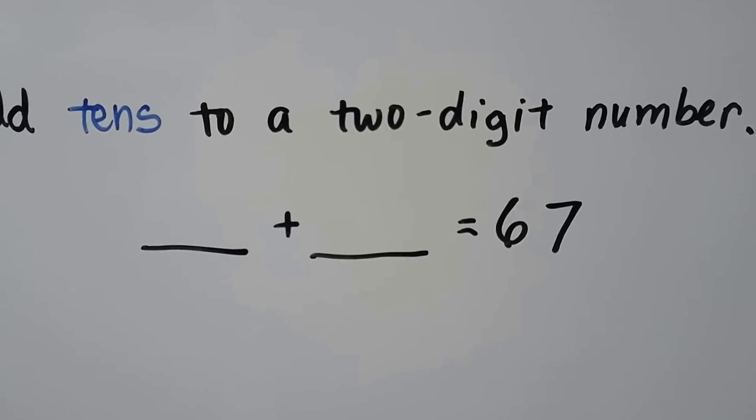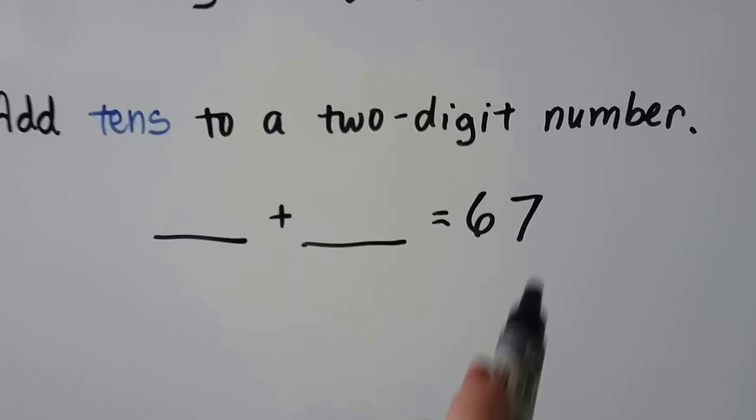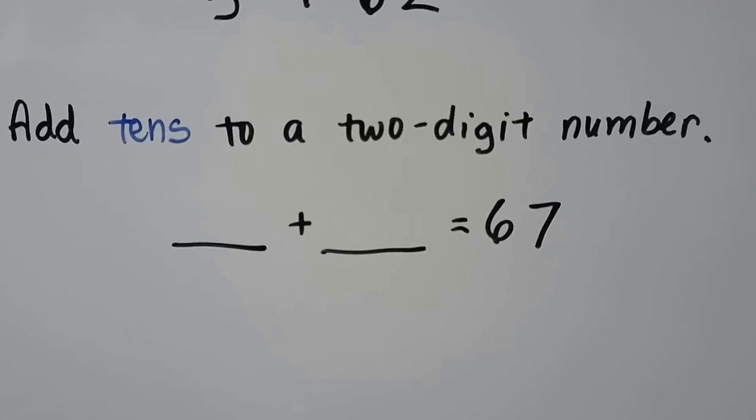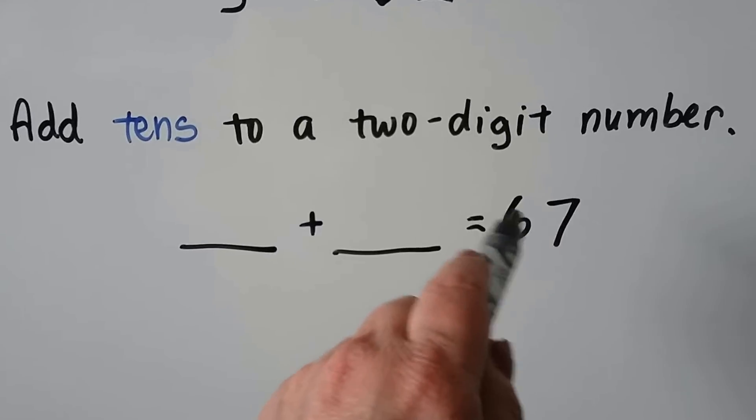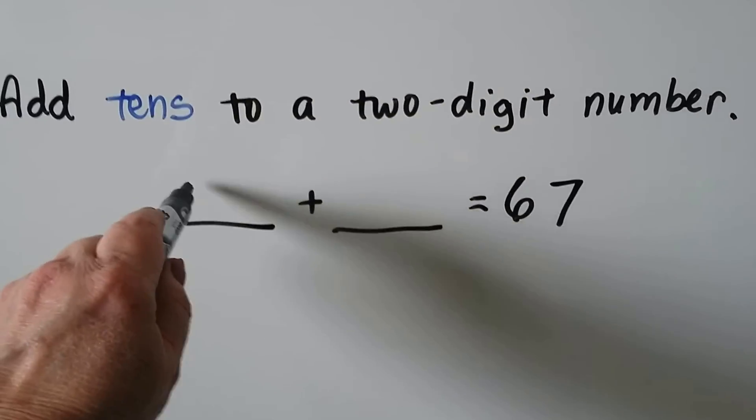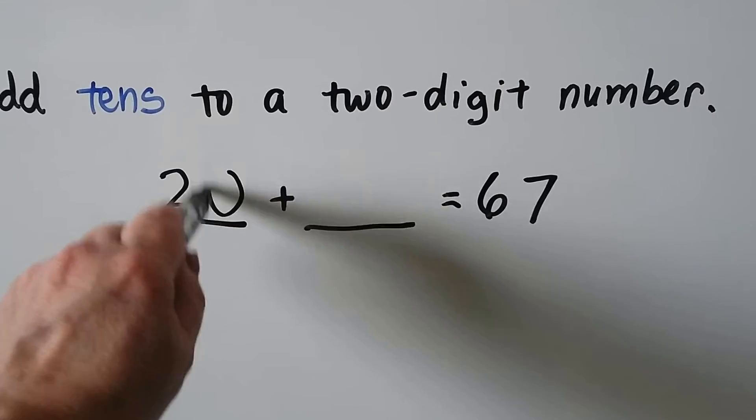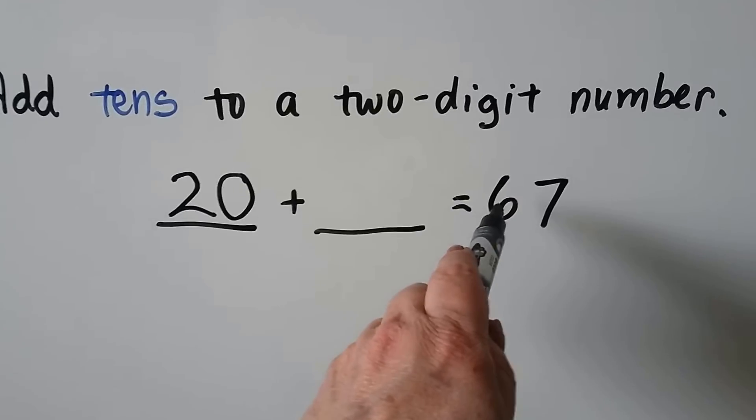We add 10s to a 2-digit number. We can add 10s to a 2-digit number so that it equals 67. We can take some 10s away from here. We have 6 tens. We can put 2 tens here as a 20.